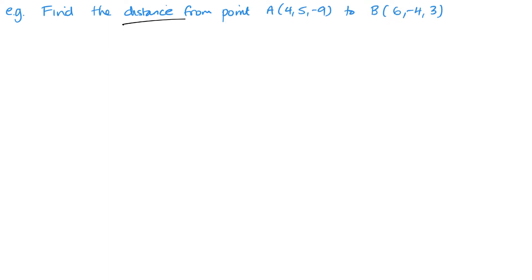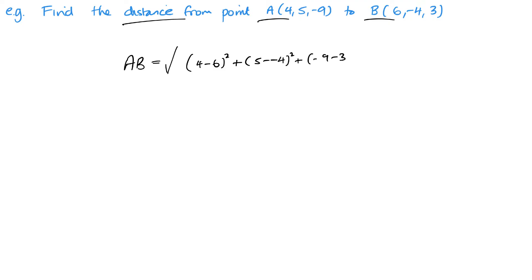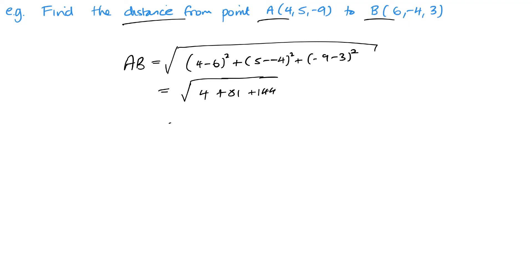Second example: find the distance from A to B. AB equals the square root of (4−6) squared plus (5−(−4)) squared plus (−9−3) squared. It doesn't matter which way around you do this. So we have (−2) squared which is 4, then 9 squared which is 81, and (−12) squared which is 144. That gives the square root of 229, or 15.1 to one decimal place.